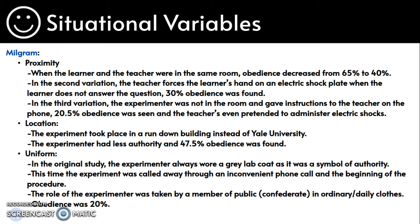In the third variation, the experimenter was not in the same room and gave instructions to the teacher over the phone — 20.5% obedience was seen. The second situational variable was location: the experiment was run in a run-down building instead of Yale University, and so the experimenter had less authority, resulting in 47.5% obedience.